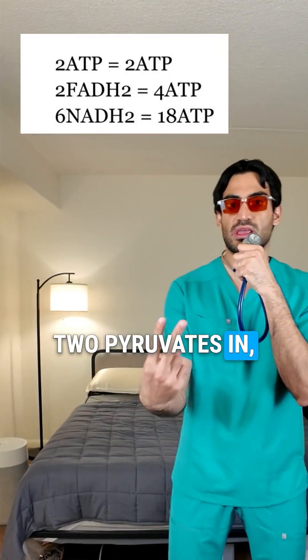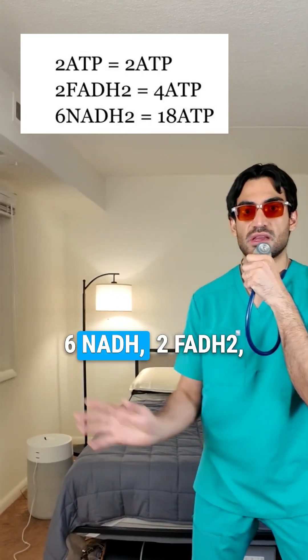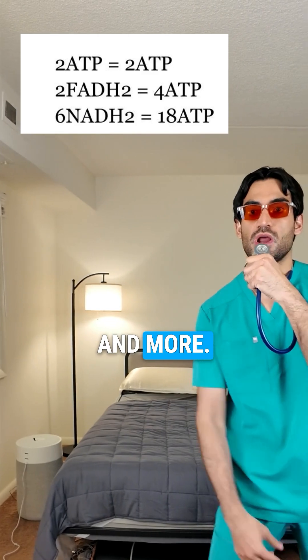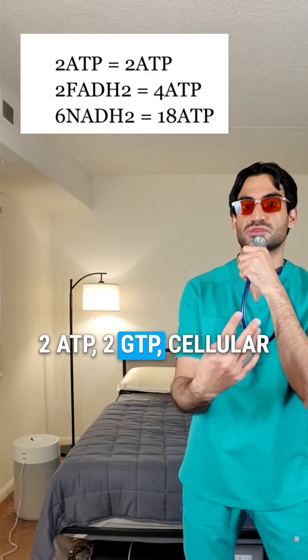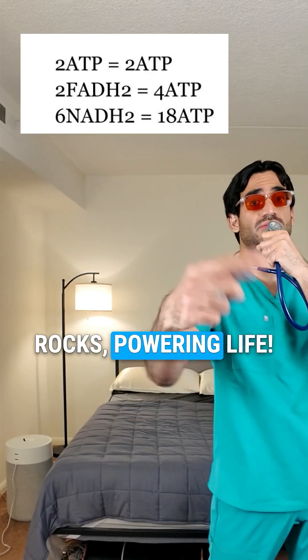Enzymes set the pace. Two pyruvates in, what's the score? Six NADH, two FADH2 and more. Two ATP, two GTP combined. Krebs cycle rocks, powering life.